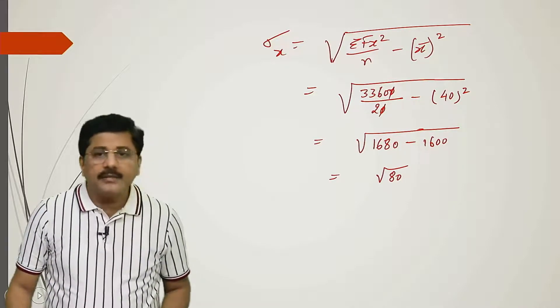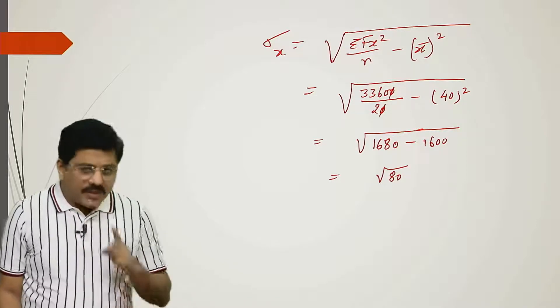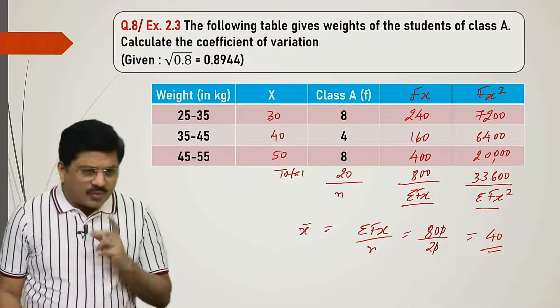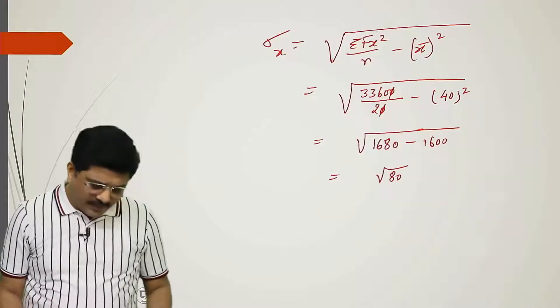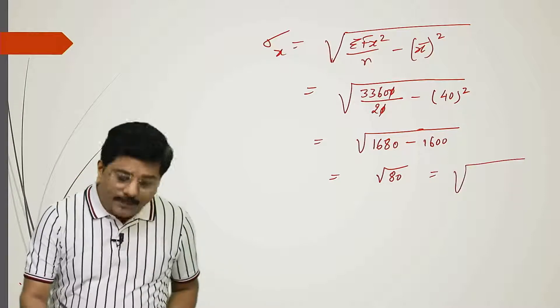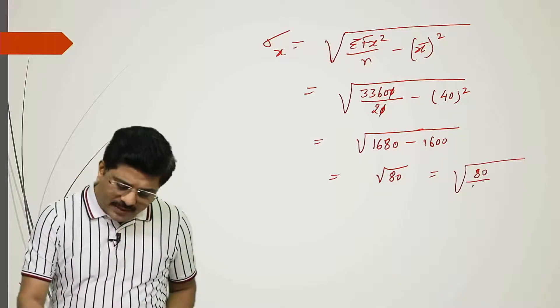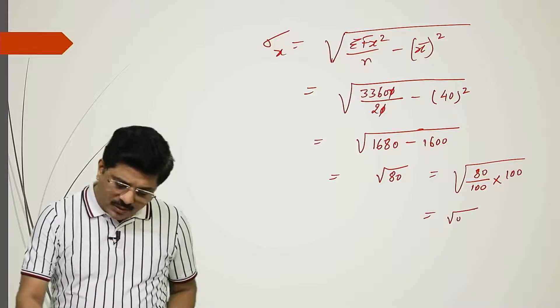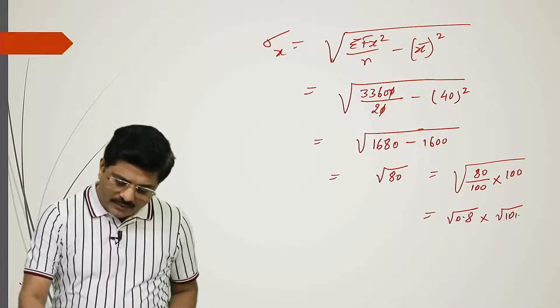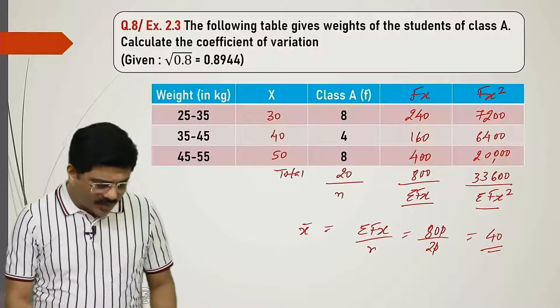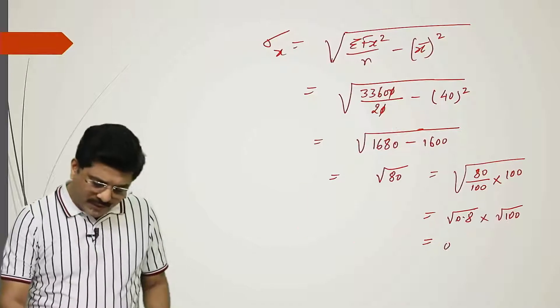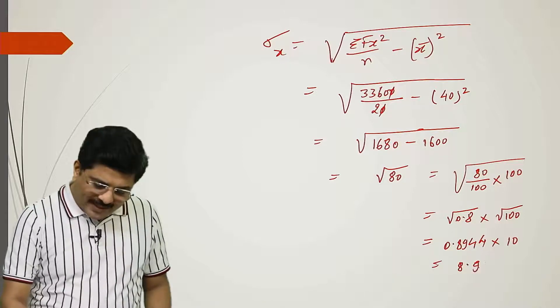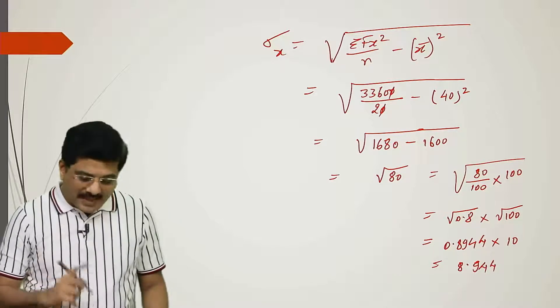We need to find square root of 80. Is anything given in the question? Actually we could leave it at standard deviation, but some details are given in the question. Let's see: under root 0.8 is given as 0.8944. We can use this. To get 0.8, we divide 80 by 100, and multiply by 100 to maintain equality. So we can write this as under root 0.8 into under root 100. Under root 0.8 is given as 0.8944, and square root of 100 is 10. Multiplying gives 8.944. This is our standard deviation of x.